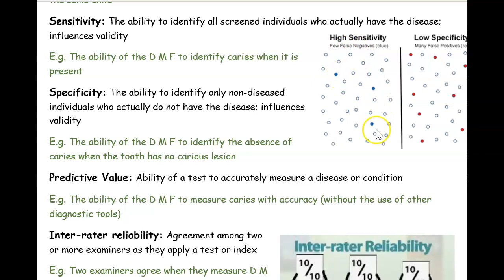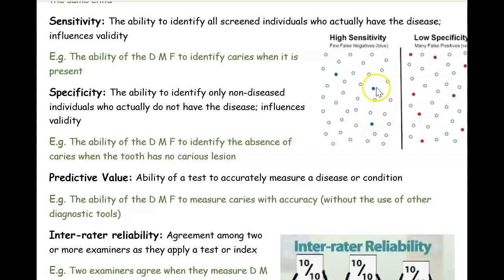if I made only a few mistakes but overall did pretty well, that's high sensitivity. I was able to identify almost all screened individuals who have caries, with only three exceptions. High sensitivity means you have very few false negatives — you did a good job identifying people who have caries and the DMFT index worked well.